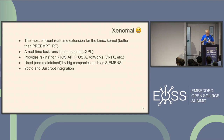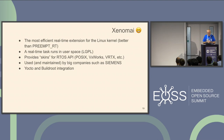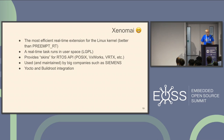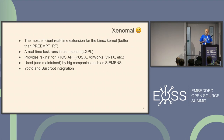We can say Xenomai is the most efficient real-time extension for the Linux kernel — better than Preempt RT — but much more difficult to install and sometimes difficult to use. The real-time task runs in user space, so using the LGPL. There are several skins. It's used by big companies such as Siemens, which I think is a very important contributor. Yocto and Buildroot integration is quite important too. If you need real-time for Linux, you use Preempt RT. But if you need advanced real-time, sometimes you need Xenomai.